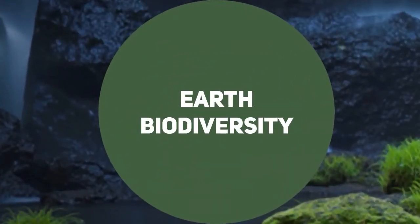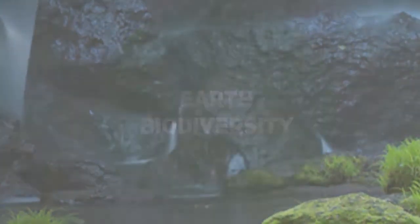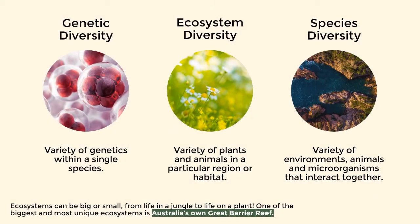First, we're going to look at Earth's biodiversity. Diversity is divided into some levels. Genetic diversity is the variety of genetics within a single species. Species diversity is the variety of plants and animals in a particular region or habitat. Ecosystem diversity is the variety of environments, animals and microorganisms that interact together. Ecosystems can be big or small, from life in a jungle to life on a plain. One of the biggest and most unique ecosystems is Australia's own Great Barrier Reef.